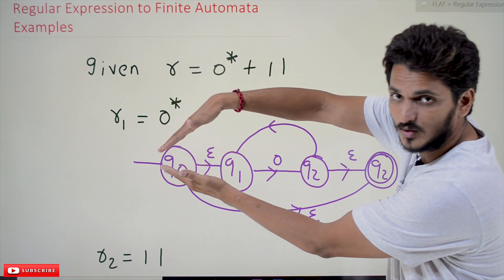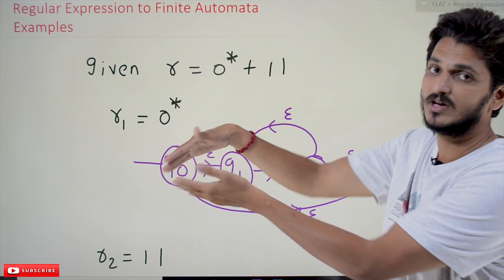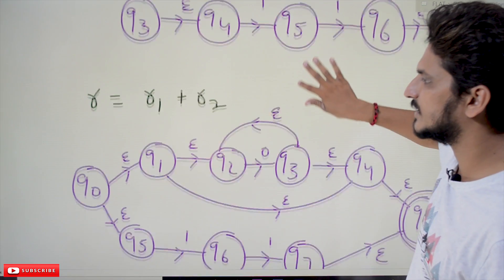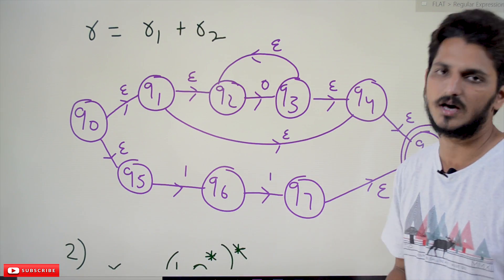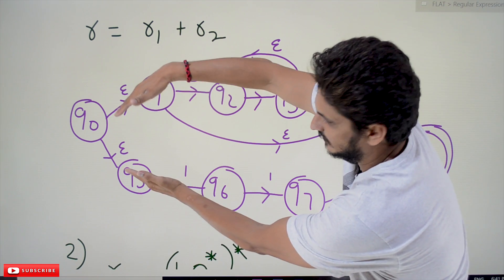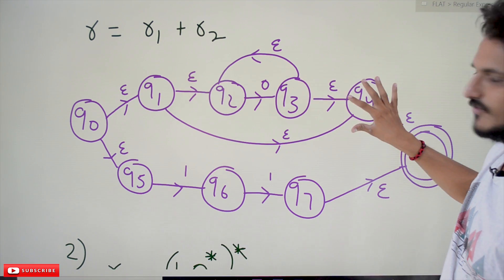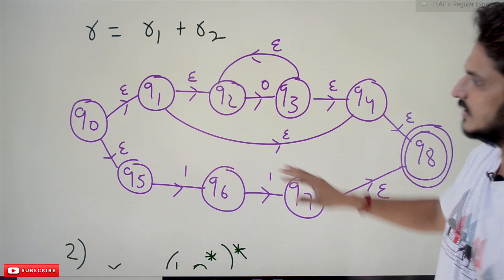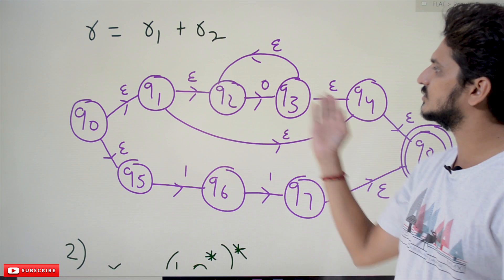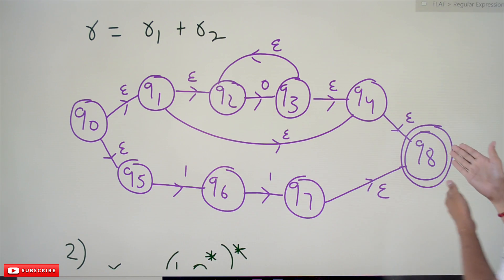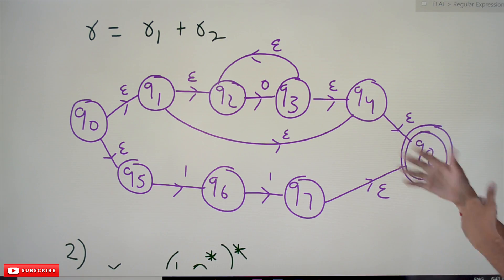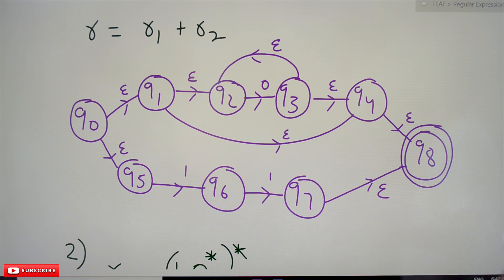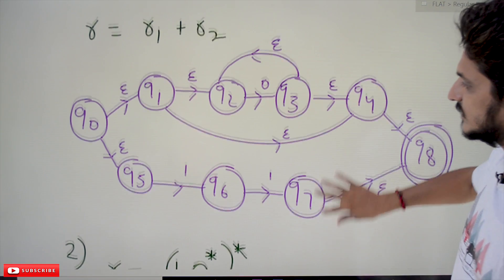When we have the union (plus) operator, this is the model we follow. The final expression is r equal to r1 plus r2. Starting from q0, we have the finite automata for 0* on one branch and the finite automata for 11 on the other branch, joining either path to the final state. This is how we combine both expressions. The final finite automata for r = 0* + 11 is written like this.